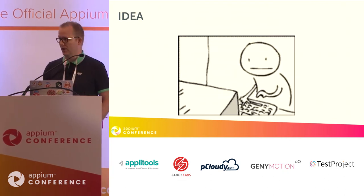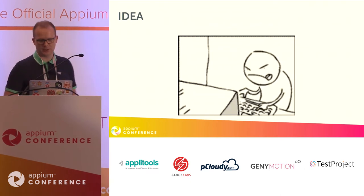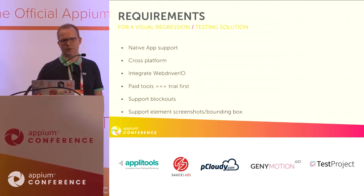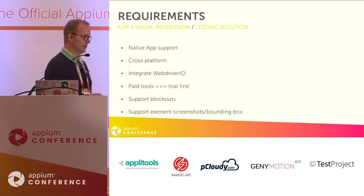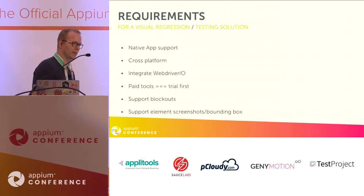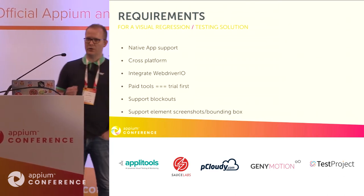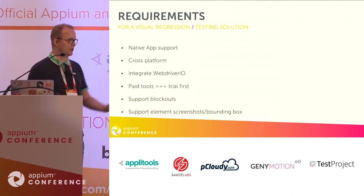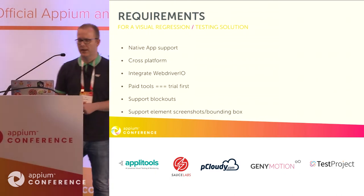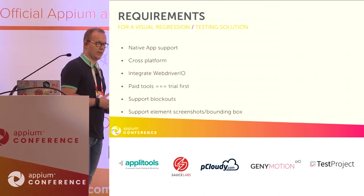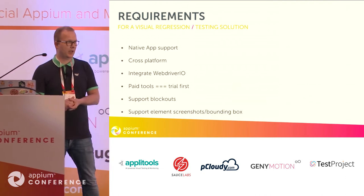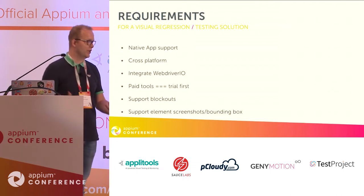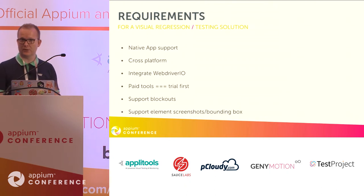I pitched the idea for doing visual comparison and got some time to do the research. When I do research I base it on requirements, so I put down requirements on paper, which we discovered together with the product owner and a developer. Our visual comparison solution should have native app support, it should be a cross-platform solution. We were using React Native — writing in JavaScript, compiled to native iOS and native Android. We also wanted it to integrate with WebDriver.io, the tool we were already using and had written all our tests in.